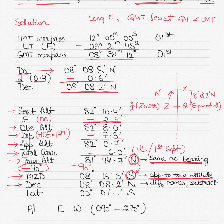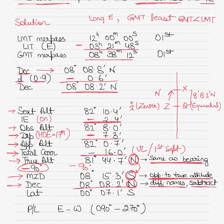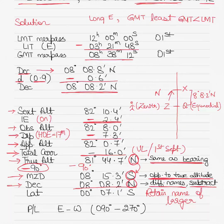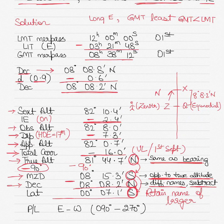Write down the declination: 8 degrees 8.2 minutes North. Compare MZD (8° 15.3' South) with declination (8° 8.2' North). They have different names, so subtract the smaller from the larger and retain the name of the larger. The larger value is the MZD, which is South. So the observed latitude is 0 degrees 7.1 minutes South — you are 7.1 minutes south of the equator, not exactly at the DR latitude of the equator.